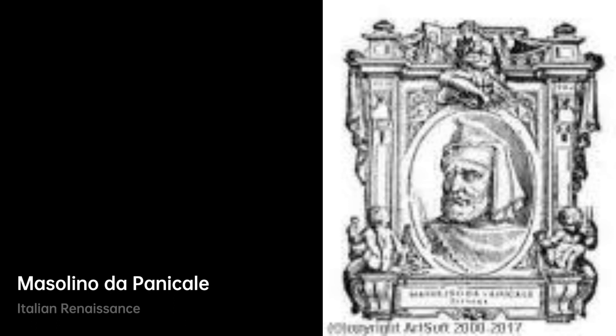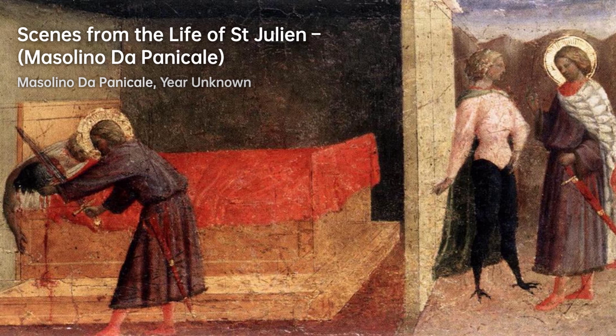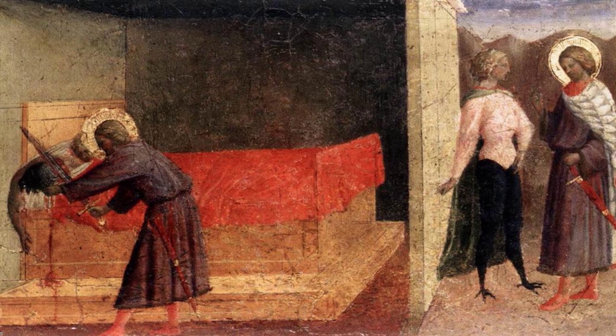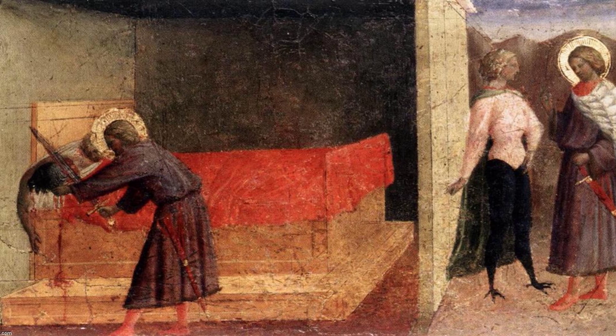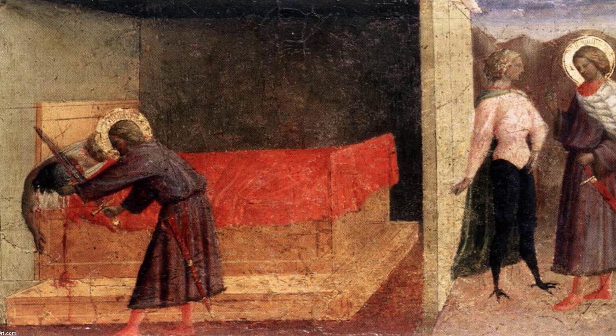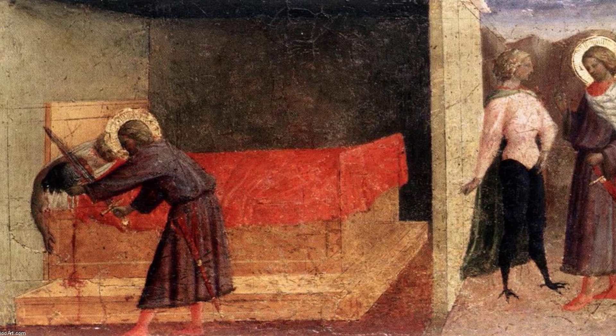Masolino di Panicale was an artist who was known for his contributions to the art movement of L2. He worked extensively with Masaccio, and their collaboration resulted in some of the most famous pieces of their time, such as the Madonna with Child and Saint Anne. Masolino is also known for his stunning frescoes in the Brancacci Chapel. His style can be described as elegant and graceful, with a focus on naturalistic depictions of figures and landscapes.